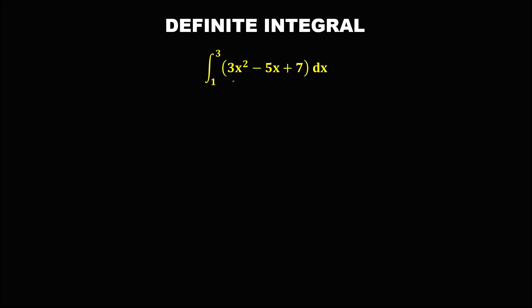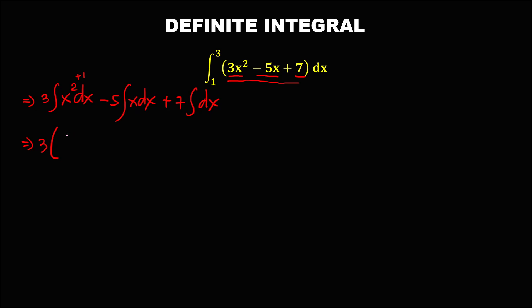To find the value of this definite integral, we first need to find the antiderivative. We put the constant outside: for the first term we have 3 times the integral of x² dx, for the second term we put the constant outside giving the integral of x dx, and for the third term we put the constant outside giving the integral of dx.